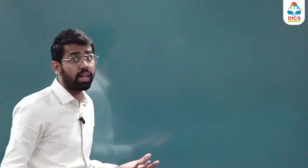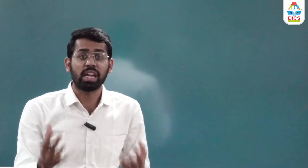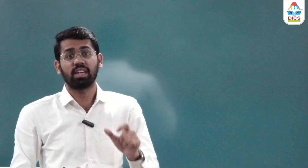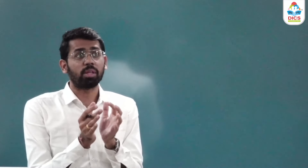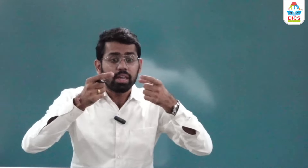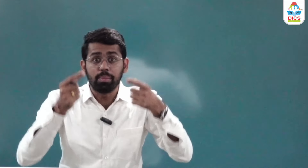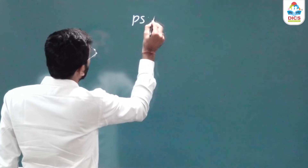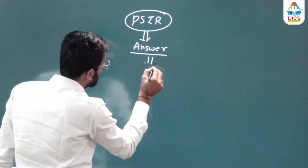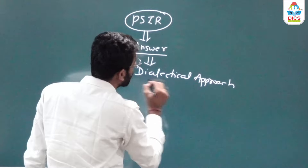Paper 1's Part A is easily approachable this way. Similarly, Part B — which is connected to polity, history, and society — also has many approaches for writing it as an optional answer, which I will keep explaining in upcoming videos. Beyond a general book list, the most important thing for scoring in optional is the art of answer writing. PSIR answers should be in a debatable form — what is called a dialectical approach. That is very, very important.